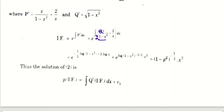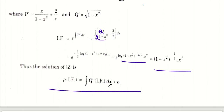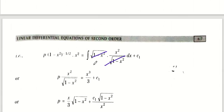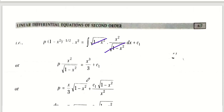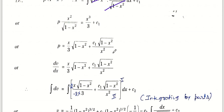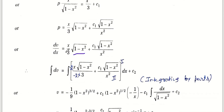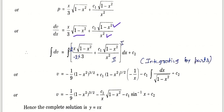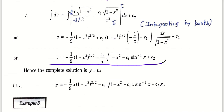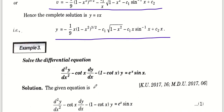Integrating factor निकालने के लिए integration with respect to x करेंगे। ऊपर वाले का derivative नीचे है, इसलिए 2 से divide और multiply किया। −(1/2)log(1−x²) आया, और 2 log x आया। Log की properties से simplify करके integrating factor बनाया। Solution formula में values put करके P निकाला, फिर integration by parts से V निकाला। V की value को U से multiply कर दिया — required solution आ गया।